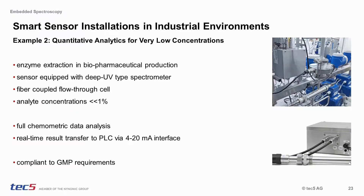Our second application is another example using a UV-based smart sensor in liquid phase, this time using a fiber-optic-coupled flow-through cell. UV spectroscopy is an extremely sensitive and specific detection method; with its typically very high extinction coefficients, measurements even at very low concentrations are feasible. In this application — a pharmaceutical separation and purification process — the concentration range has been far below 1%. In contrast to example number 1, a full chemometric data analysis has been applied and the results were transferred in real-time via a 4 to 20 mA interface.